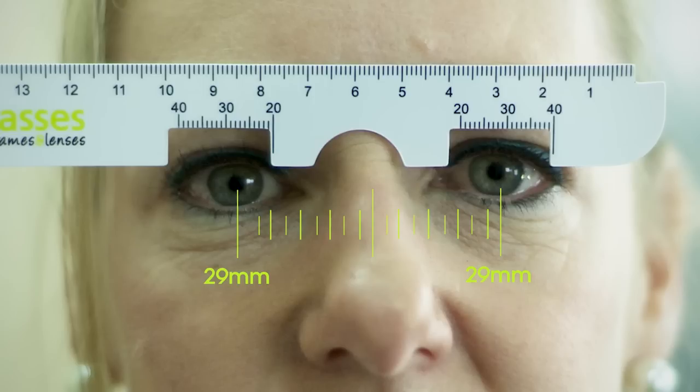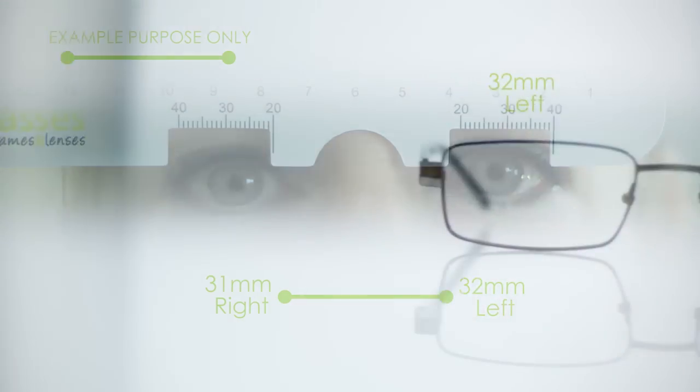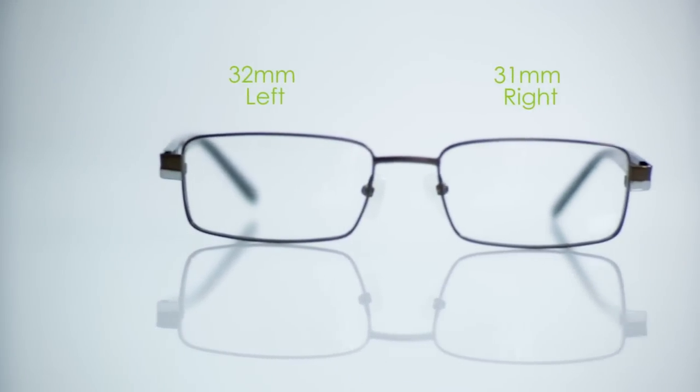Now add these numbers together to get your PD measurement. If these measurements are not the same for each eye, for example 31mm for the right eye and 32mm for the left eye, then record the figures separately so we can ensure your lenses are perfectly centered for each eye.